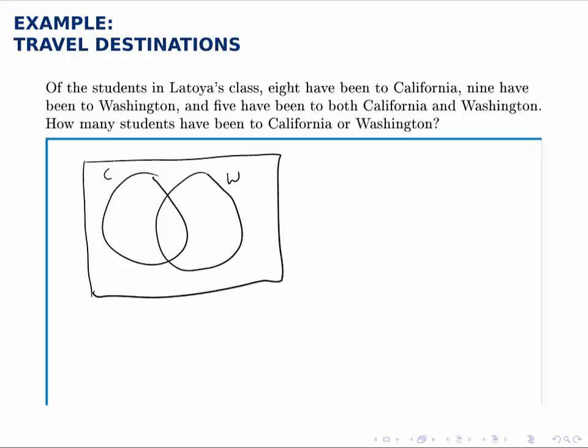The problem is, we know that eight have been to California, and nine have been to Washington, five have been to both. The question is what numbers do we put in? You may be tempted to write something like this. Eight in California, nine in Washington, and five in both.